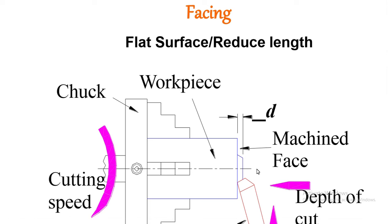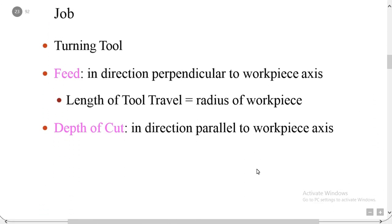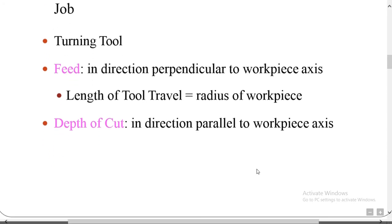Next operation — facing. Facing has two types: producing a flat surface or reducing the length. Facing is the machining of the end face of the workpiece to make it flat or to reduce the length. The workpiece may be held in a chuck or between centers. In facing, the tool is perpendicular to the axis of rotation of the workpiece. Only the face of the workpiece is machined — hence the name facing. The tool feed is in the perpendicular direction and depth of cut is parallel to the workpiece.